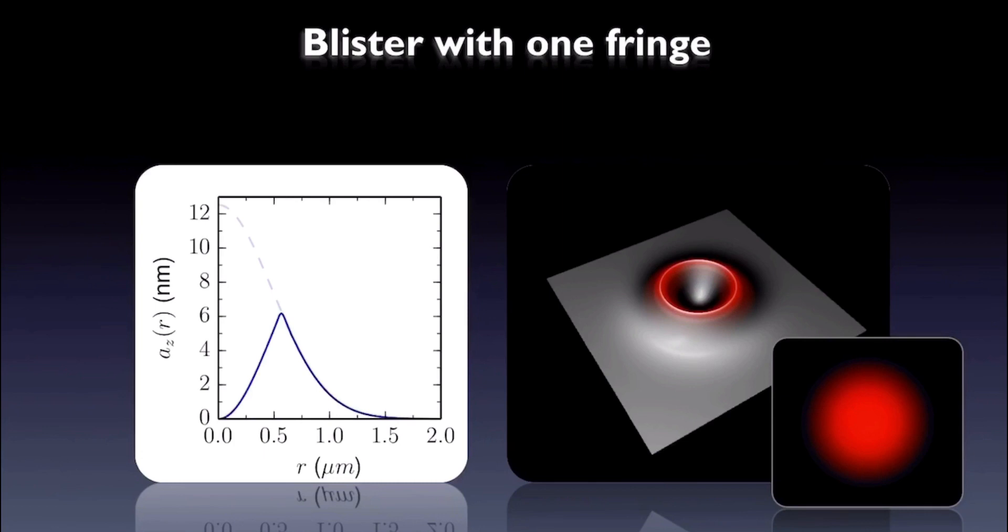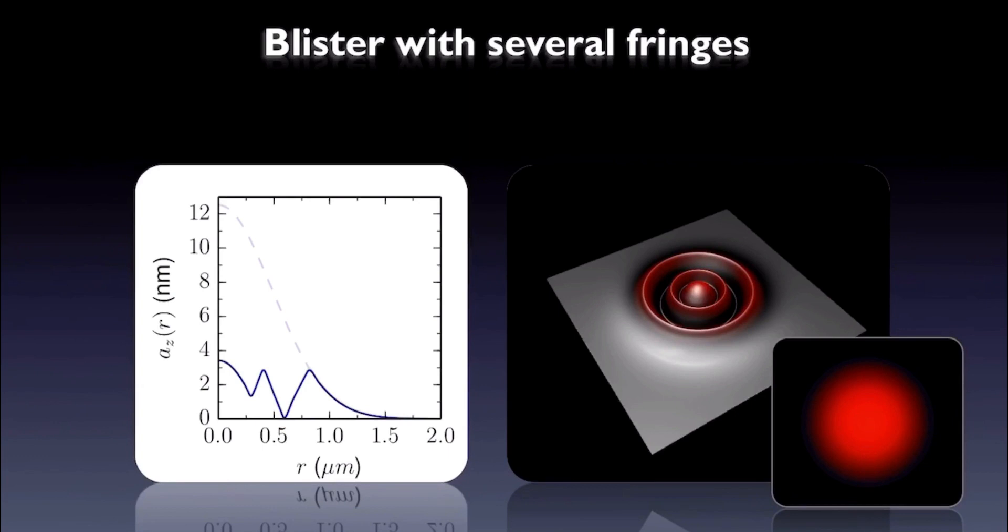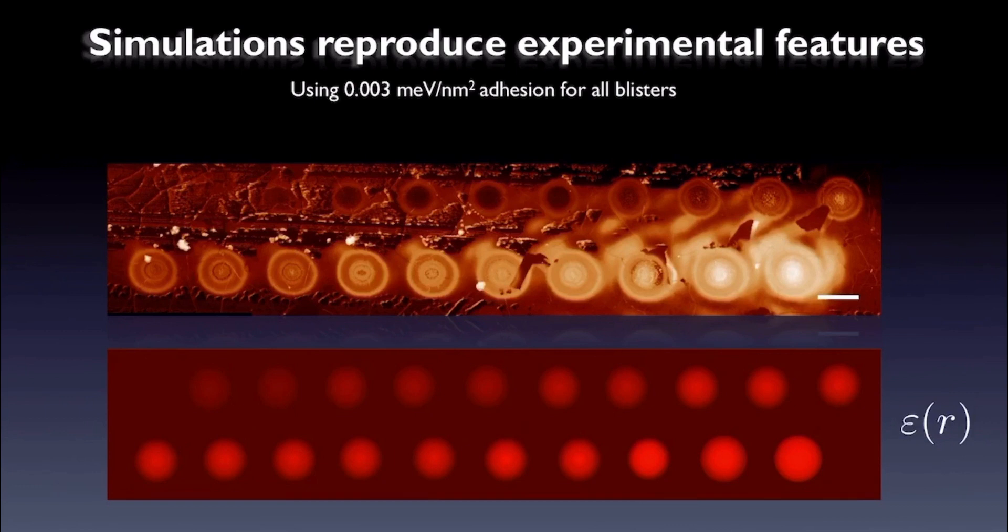Note that this was without adhesion, but the effect of adhesion is just to pull the graphene down some amount toward the substrate. So when we took the experimentally estimated expansion fields and a fitted value for the adhesion, the thin-sheet elasticity theory was able to reproduce the experimentally observed features fairly well.